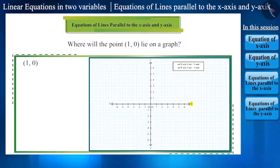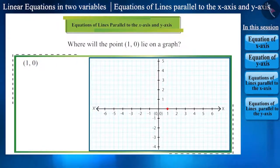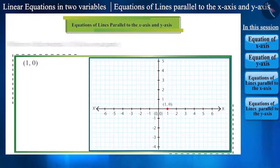Here, the x-coordinate is 1 and the y-coordinate is 0. Hence, this point will lie on the x-axis. Where will the point 2, 0 lie? This will also be on the x-axis.